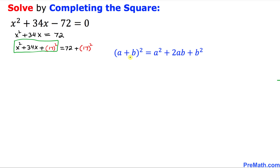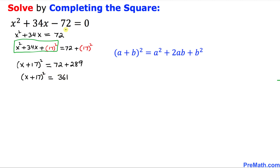The left-hand side represents a perfect square. Using the identity A plus B squared equals A squared plus 2AB plus B squared, we can write it as X plus 17 squared. On the right side, 17 squared is 289, so X plus 17 squared equals 72 plus 289, which is 361. Taking the square root of both sides, the square and square root cancel, giving us X plus 17 equals plus or minus the square root of 361, which is positive or negative 19.